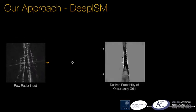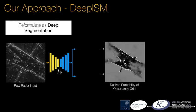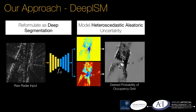By reformulating our problem as a segmentation task, we leverage the power of a deep network to account for scene context, explicitly modelling heteroscedastic aleatoric uncertainty.